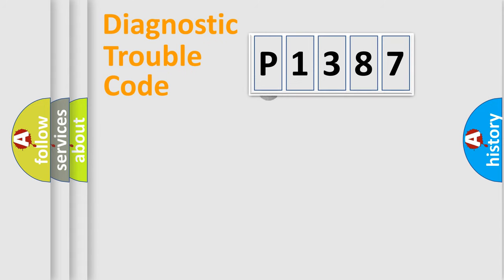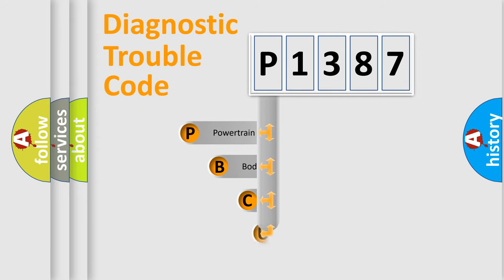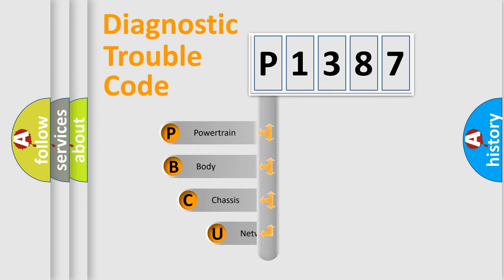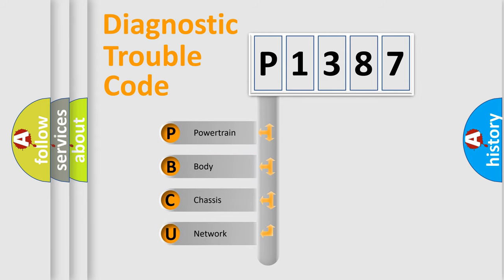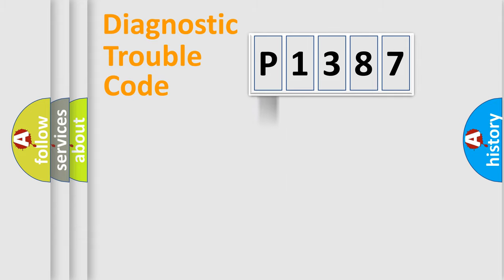First, let's look at the history of diagnostic fault code composition according to the OBD2 protocol, which is unified for all automakers since 2000. We divide the electric system of an automobile into four basic units: Powertrain, Body, Chassis, and Network. This distribution is defined in the first character of the code.